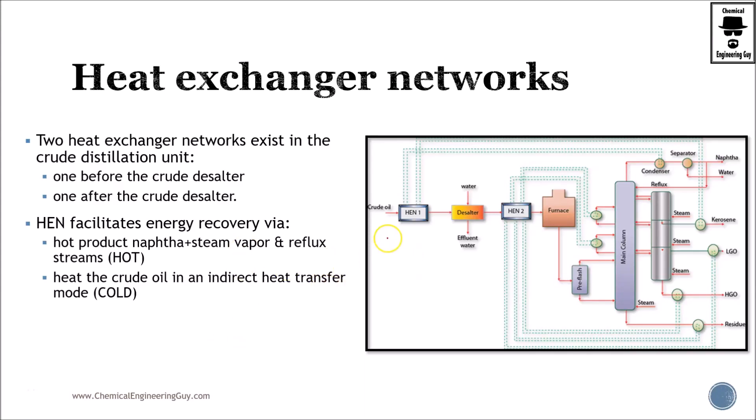We have been talking about heat exchanger networks for preheating, but we haven't paid much attention to this, so let's check it out. We know there is a furnace which increases the temperature, and sometimes we have pre-flashing; otherwise we can directly add this to the column.